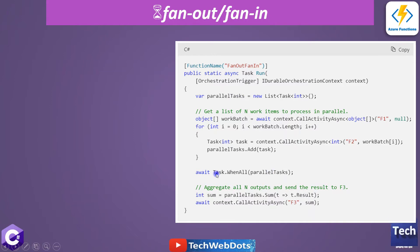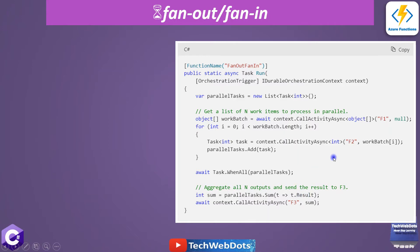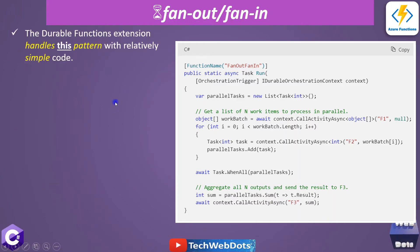Once all the parallel tasks are set up, we call Task.WhenAll, which activates all the functions to compute their values concurrently. In the next step, we calculate the sum of all results from every f2 function call using parallel dot sum, storing it in the sum integer variable. That sum is then passed to function f3.